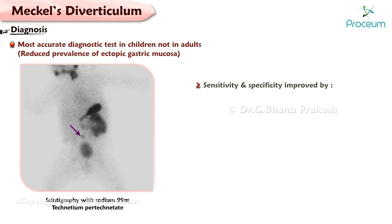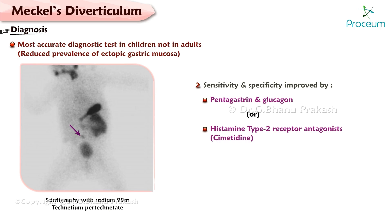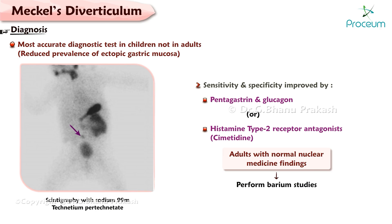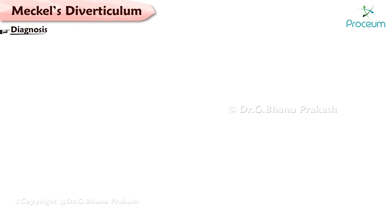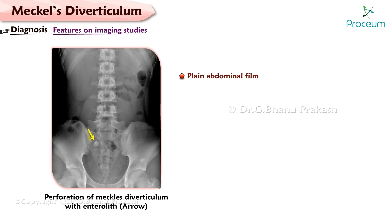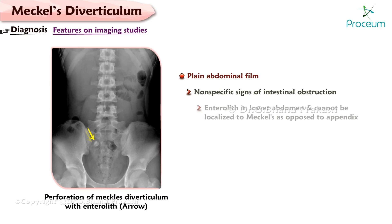Sensitivity and specificity can be improved by pentagastrin, glucagon, or histamine type-2 receptor antagonists. In adults with normal nuclear medicine findings, barium studies should be performed. Features on imaging: plain abdominal film may demonstrate nonspecific signs of intestinal obstruction. An enterolith may be seen in the lower abdomen, but cannot be definitively localized to Meckel's as opposed to the appendix.